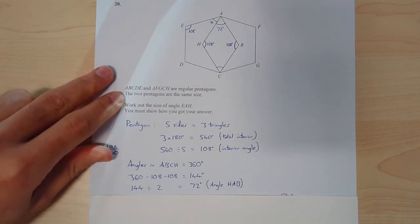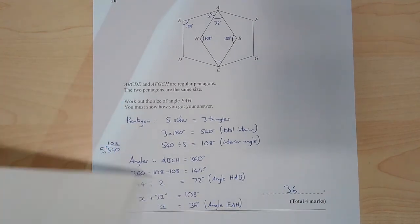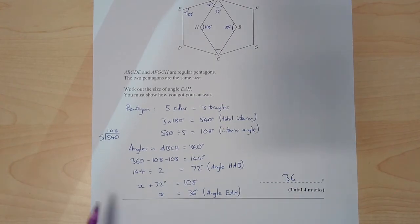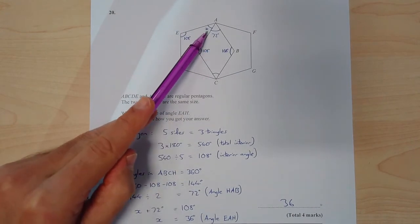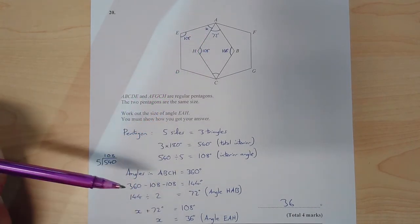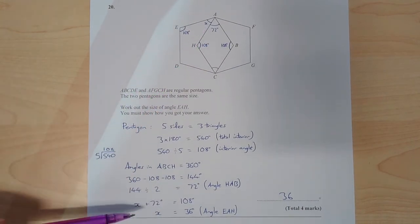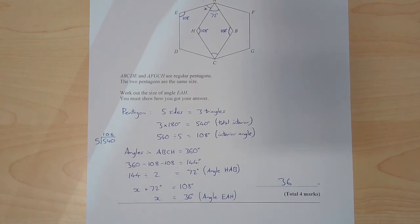I can set this up. I can say X plus that 72 must equal 108. Okay, those two combined must add to give 108. And by doing that, I can work out that that missing angle is 36 degrees.